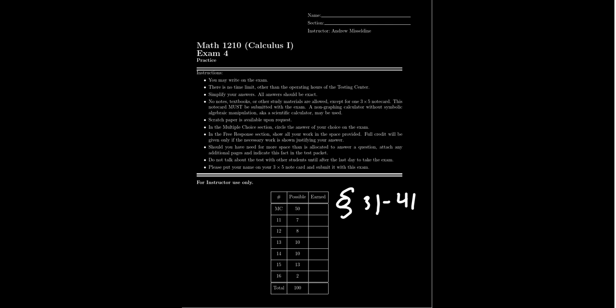This test will include 15 questions. The first 10 questions will be multiple choice, worth 5 points each. Questions 11 through 15 will be in the free response section, with points varying: question 11 is worth 7 points on the low side, and question 15 is worth 13 points on the high side. Each question is approximately 10 points on average. There will also be 2 points for turning in your approved notes at the end of the exam.